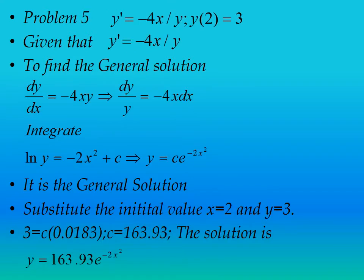The next problem is y' = -4x/y, with initial value y(2) = 3. Separating the variables: dy/y = -4x·dx. Integrating gives ln|y| = -2x² + c, so y = c·e^(-2x²). This is the general solution. Substituting the initial value x = 2, y = 3 gives c ≈ 163.93. So the particular solution is y = 163.93·e^(-2x²).